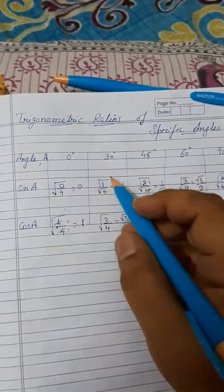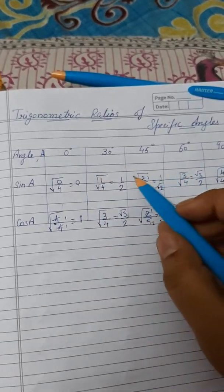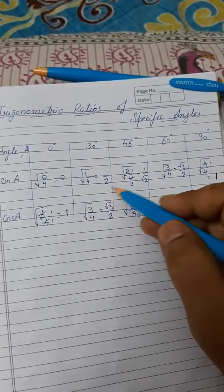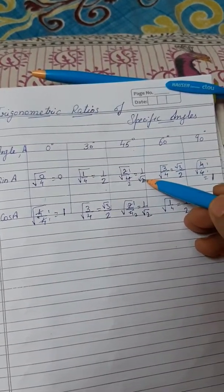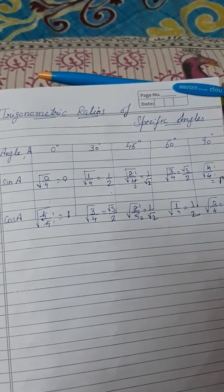So, the values come out to be: sine 0 degree, sine 0 is 0. Sine 30 degree is 1 by 2. 45 degree is 1 by under root 2. Sine 60 degree under root 3 by 2. And sine 90 degree is 1.